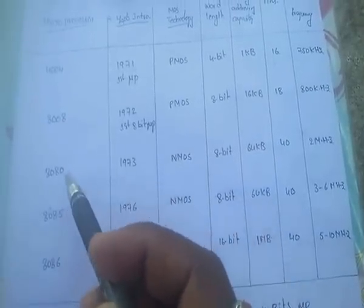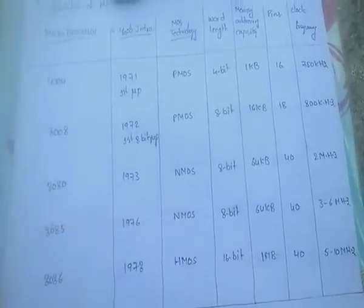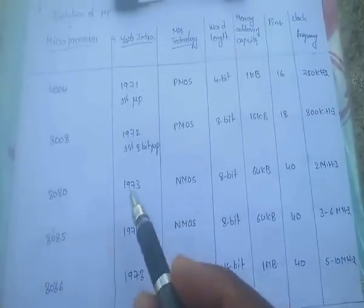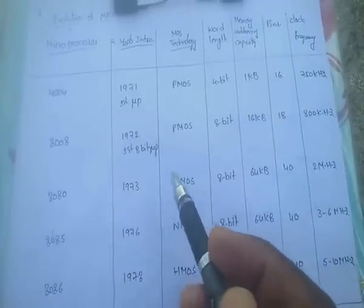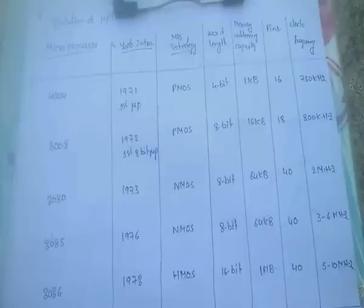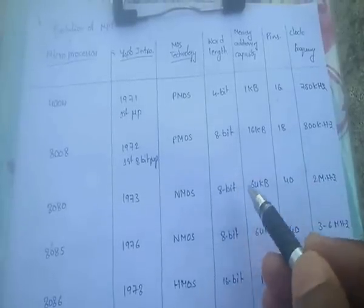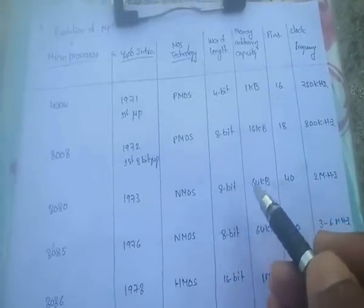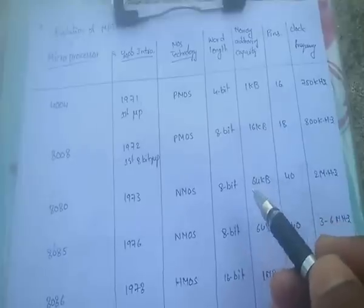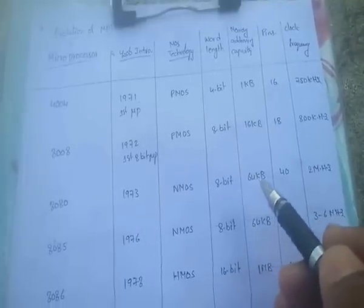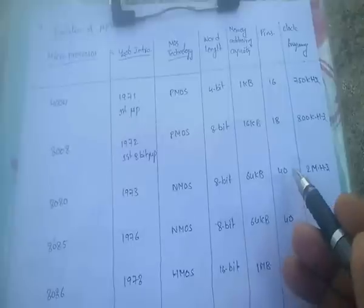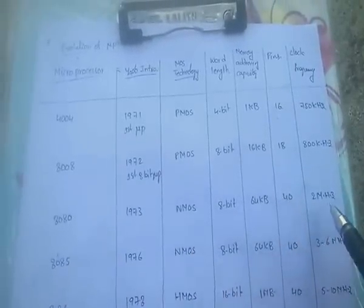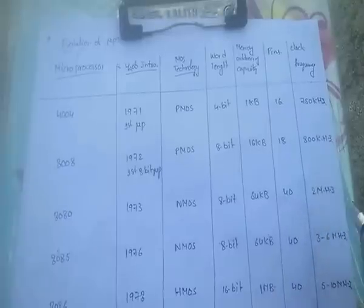The next microprocessor developed in 1973 is the 8080. It uses NMOS technology, has an 8-bit word length, memory addressing capacity of 64 kilobytes, 40 pins, and a clock frequency of 2 MHz.